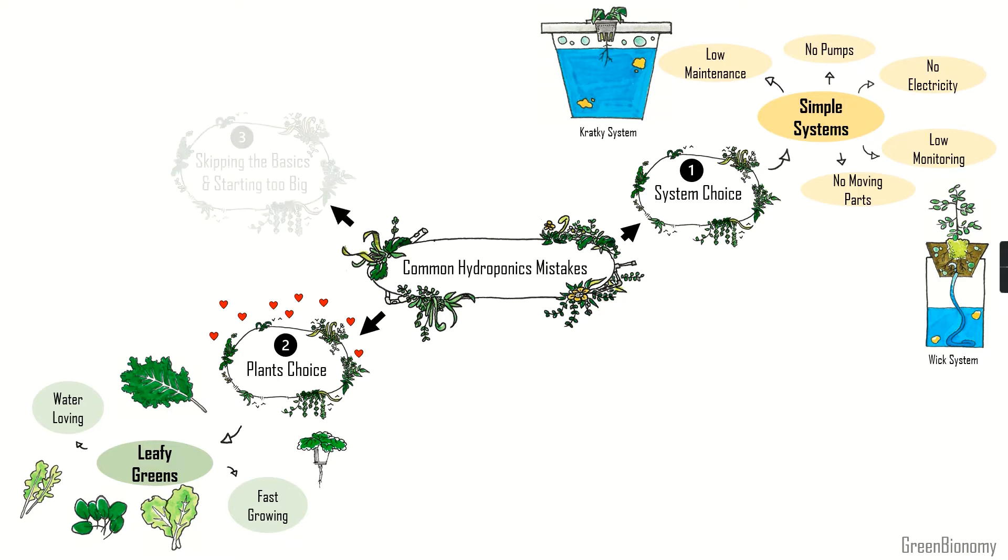Our third mistake is starting too big, moving too fast and ignoring the basics. This is related to the system and plants choice. Complexity aside, more plants mean more maintenance and management for the system. It also becomes harder to troubleshoot when something happens because there are more things going on at the same time. It is better to start small with a few plants, understand how they work and what they like before adding to the system.